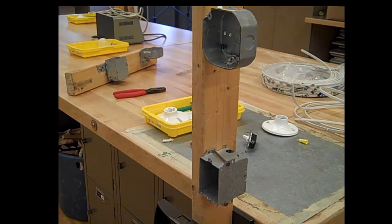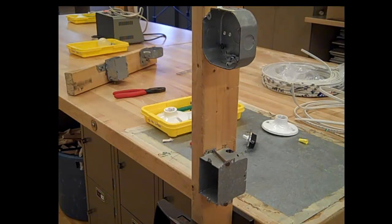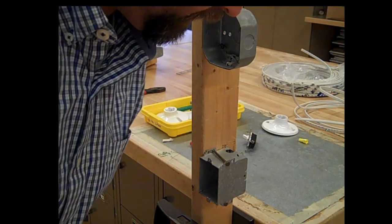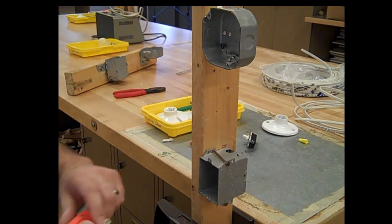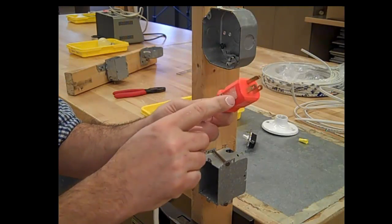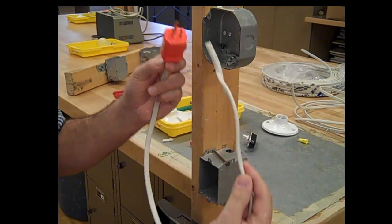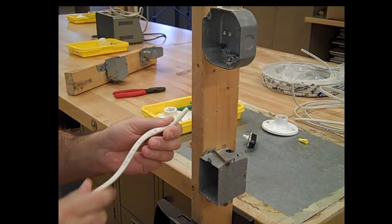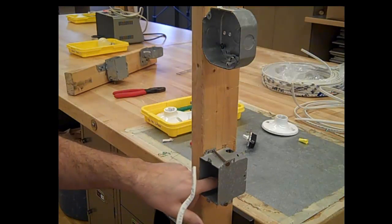Alright, here we are at the electrical unit. What we're going to do first is run our feed wires in. To do that, we're going to grab the end of the cord that has the plug on the end, find the other end of that cord, and run it up through the hole in the bottom side of the switch box.